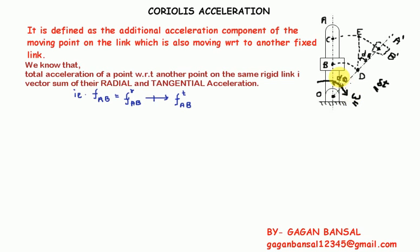The angle between OA and OA dash is del theta. The slider B moves outward with velocity v meters per second on the link OA and occupies position B dash in the same time interval delta t. So at time delta t, OA is at OA dash and point B, the slider, is at B dash. Considering the motion of the slider from B to B dash, it has three stages.